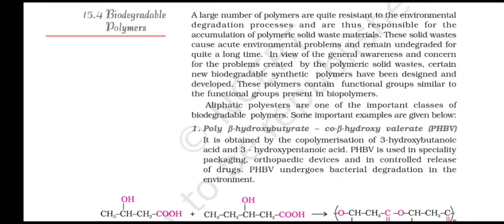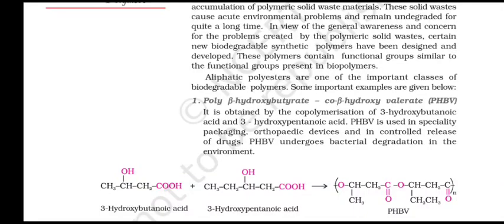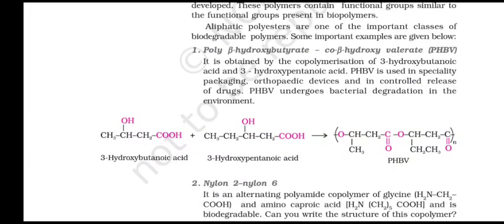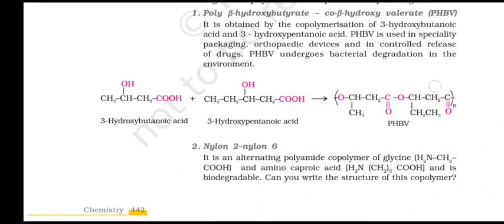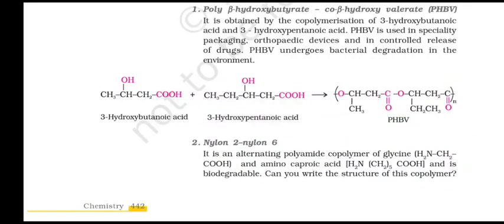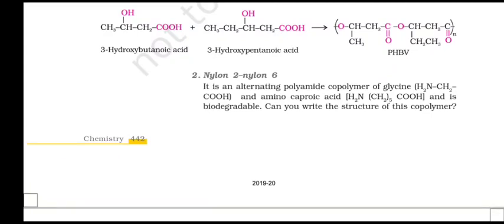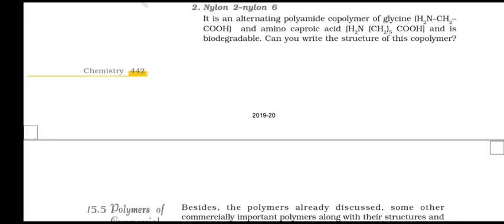Biodegradable polymers: a large number of polymers are quite resistant to environmental degradation and are thus responsible for accumulation of voluminous solid waste materials. These solid wastes cause acute environmental problems and remain undegraded for quite a long time. In view of the general awareness and concern for problems created by polymeric solid waste, certain new biodegradable synthetic polymers have been designed and developed. These polymers contain functional groups similar to those present in biopolymers. Poly(β-hydroxybutyrate-co-β-hydroxyvalerate) (PHBV) is obtained by copolymerization of 3-hydroxybutanoic acid and 3-hydroxypentanoic acid. PHBV is used in specialty packaging, orthopedic devices and controlled release of drugs, and undergoes bacterial degradation in the environment. Nylon 2–Nylon 6 is an alternating polyamide copolymer of glycine and amino caproic acid and is biodegradable.